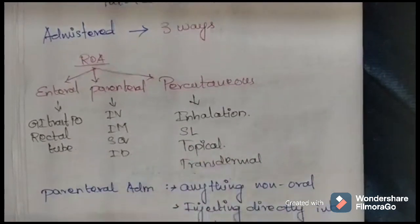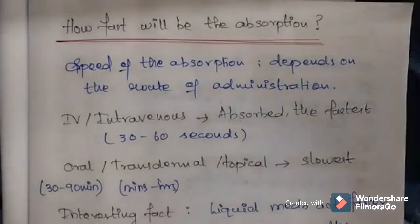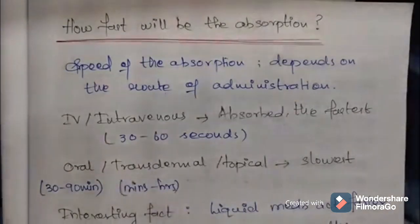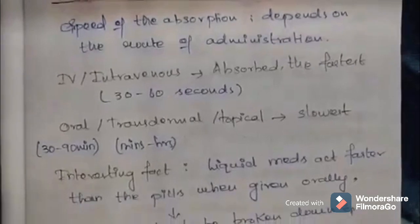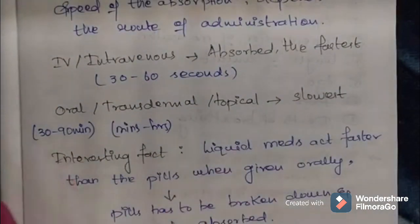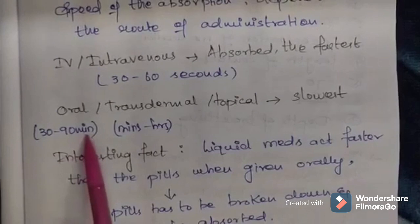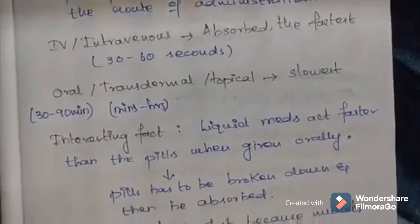Percutaneous routes of administration include inhalation, sublingual (SL), topical, and transdermal. The rate of absorption depends on the route of administration. Intravenously given drugs are absorbed the fastest — it takes just 30 to 60 seconds. Oral and transdermal or topical drugs are absorbed very slowly; orally given drugs take about 30 to 90 minutes for absorption, while transdermal takes even longer.